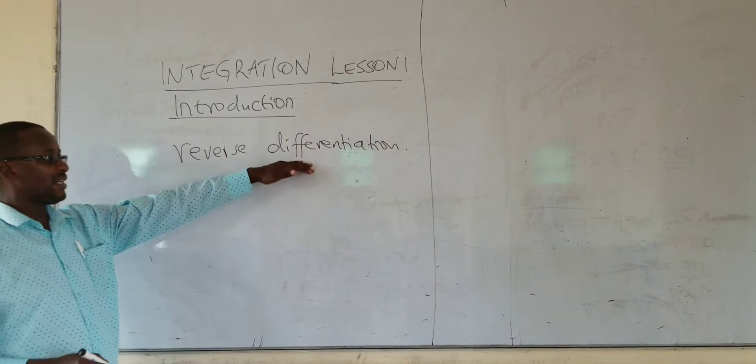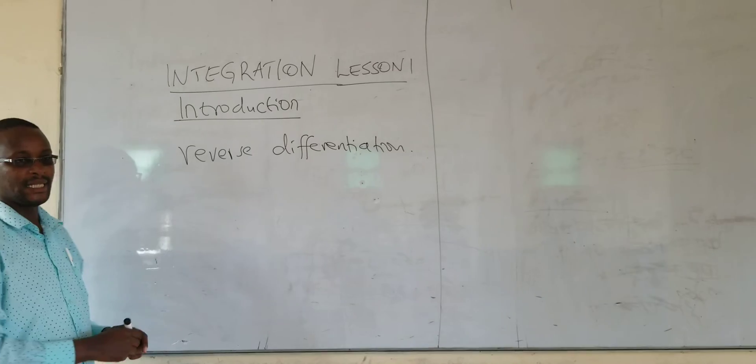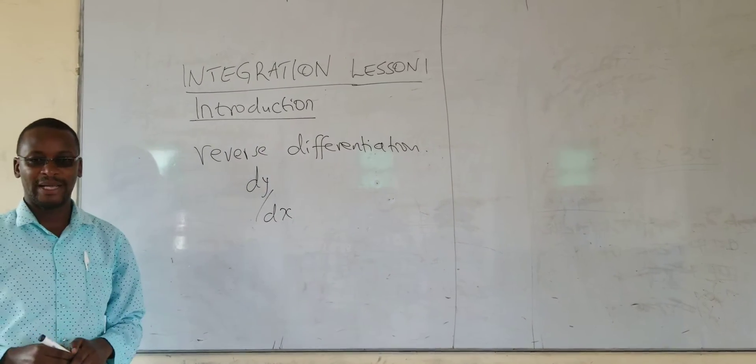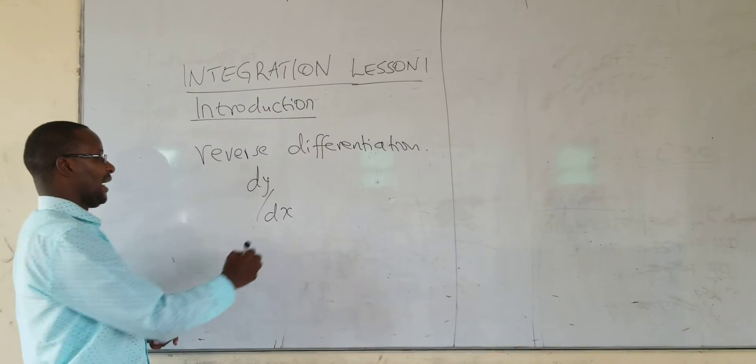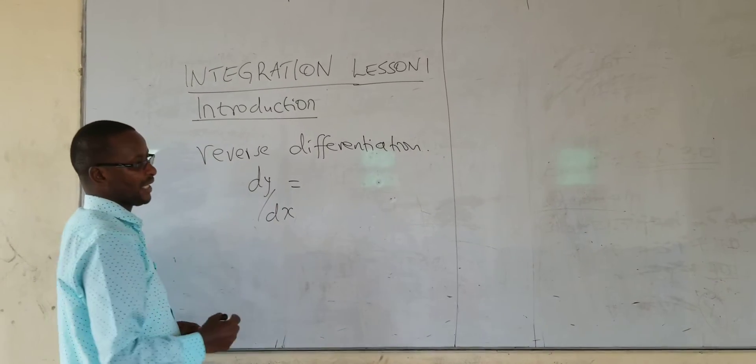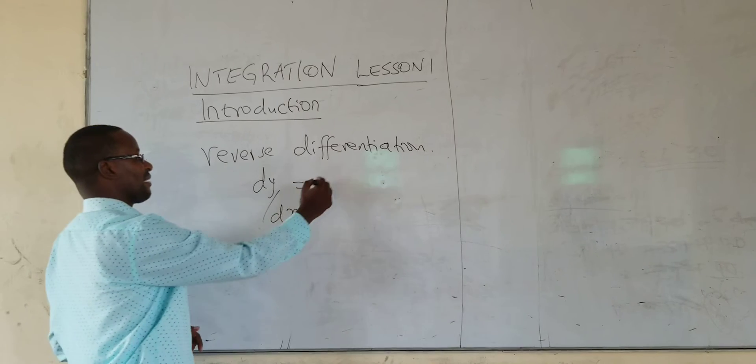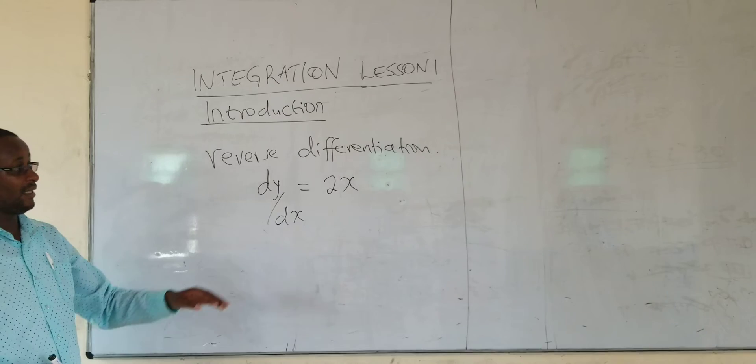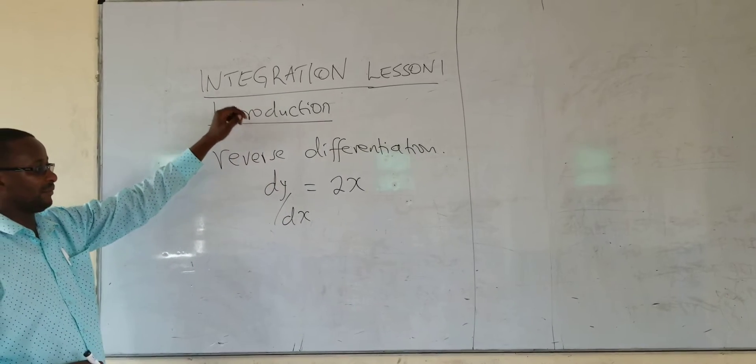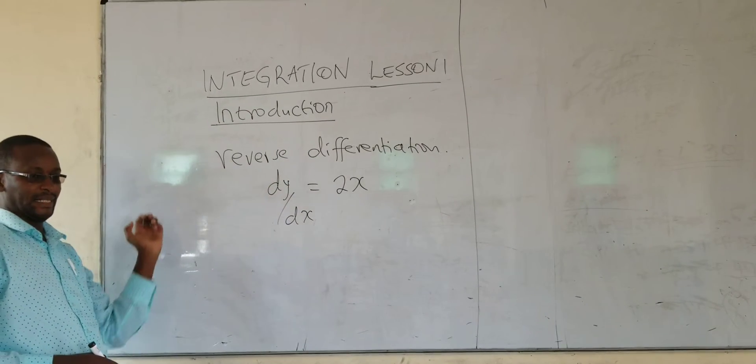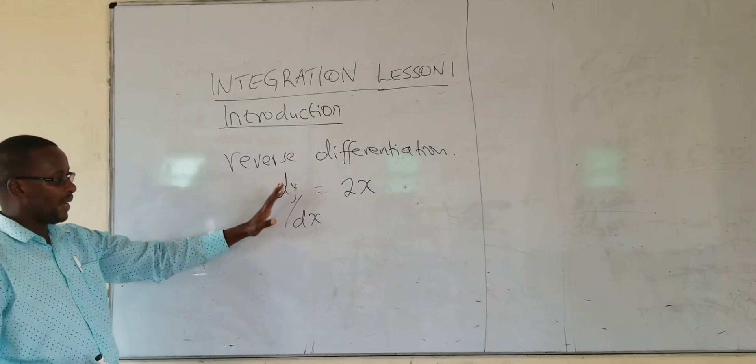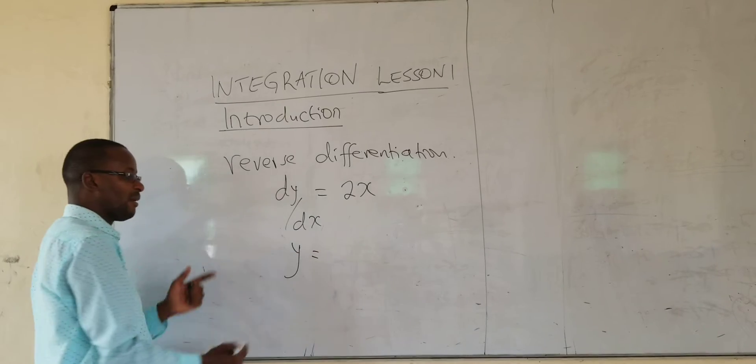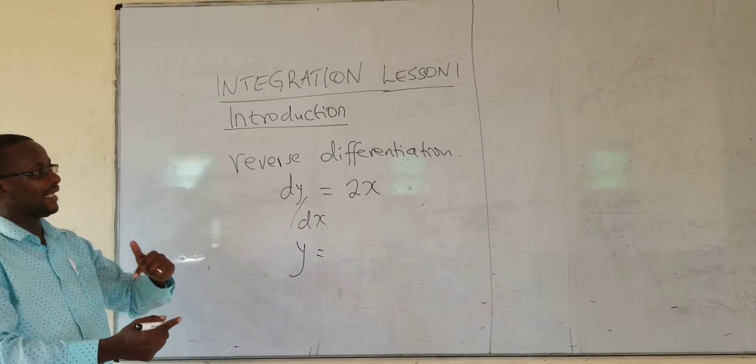In differentiation, we were getting the equation for the gradient dy by dx. That is what we were getting. Now for integration, we will be moving back from dy over dx to getting y. So we will be doing what we did but in a reverse way.